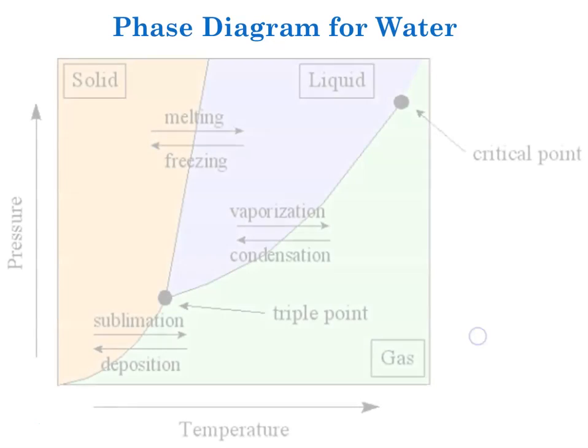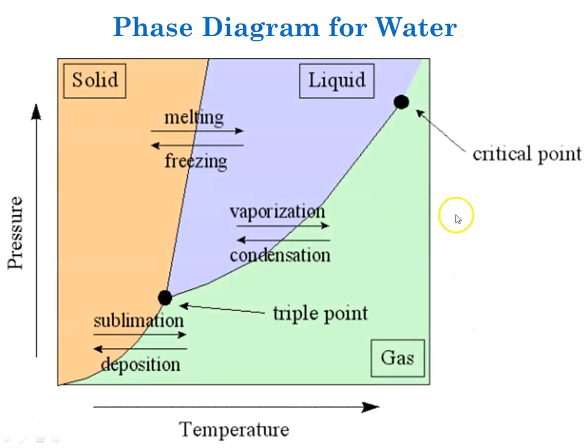So let's look at the phase diagram for water. So you'll see, as I suggested, that pressure is always on the y-axis. Temperature is always on the x-axis. Temperature may be in degrees C or Kelvin. Pressure may be in atmospheres, millimeters of mercury, or kilopascals, because those are our three units that we'll be using for pressure.